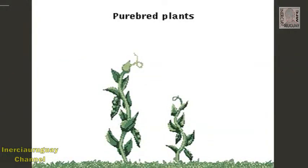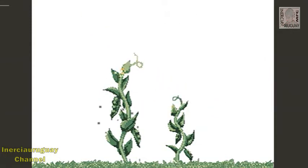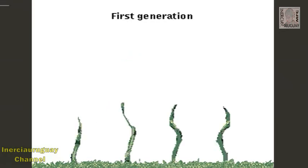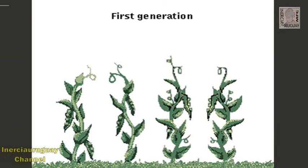Mendel then crossed a tall plant with a short plant. Surprisingly, all of the offspring were tall.